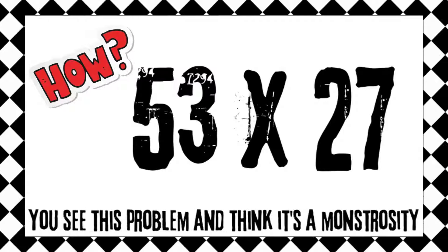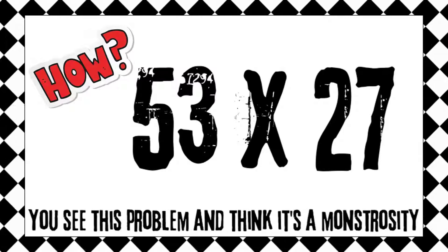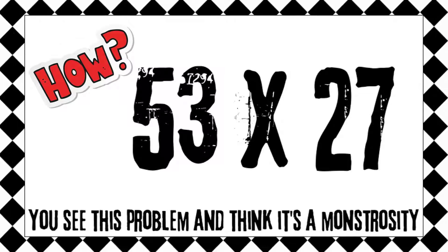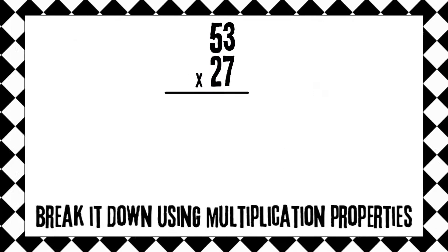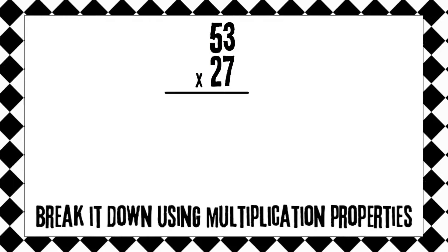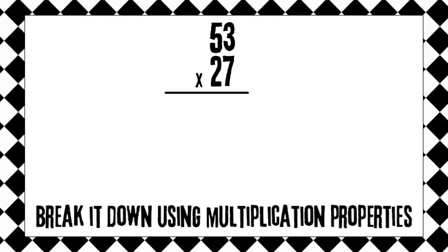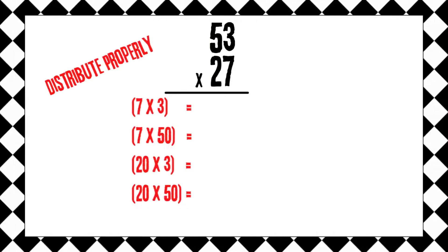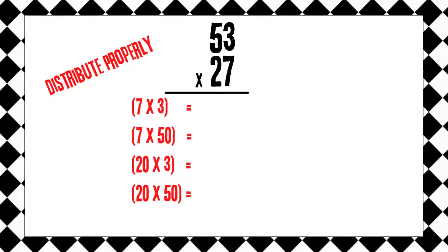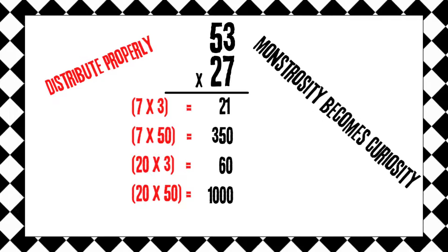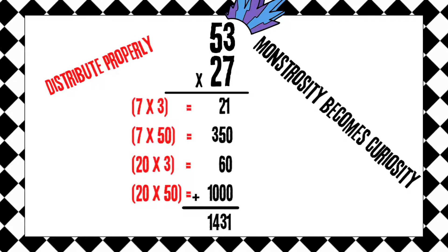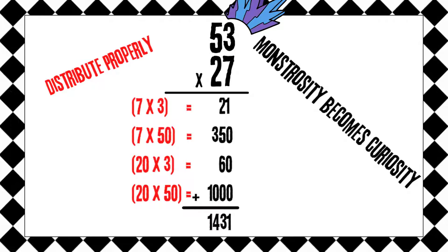You see this problem and think it's a monstrosity. Break it down using multiplication properties. Distribute promptly — how quickly a monstrosity becomes a curiosity.